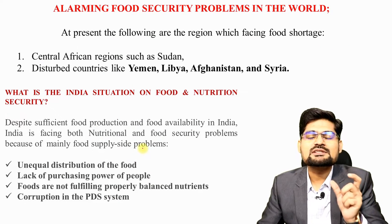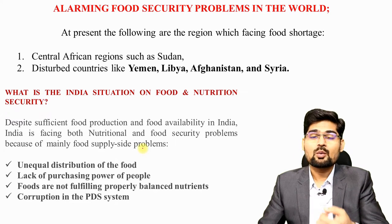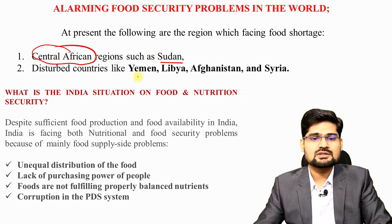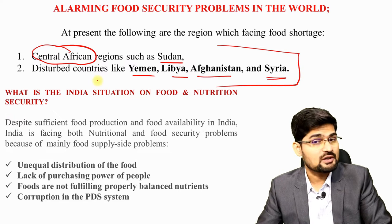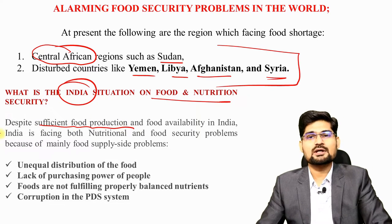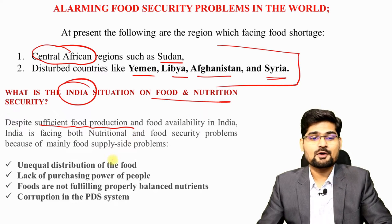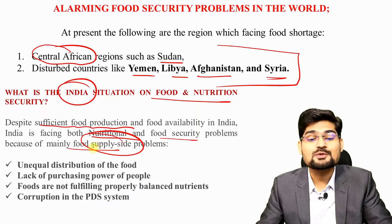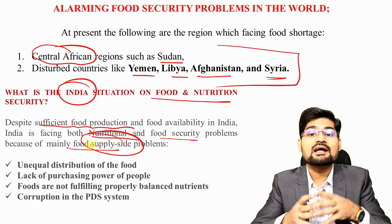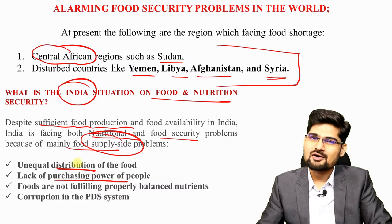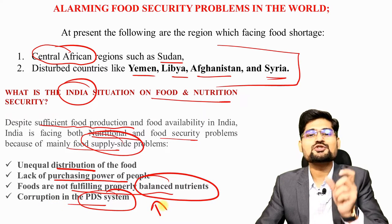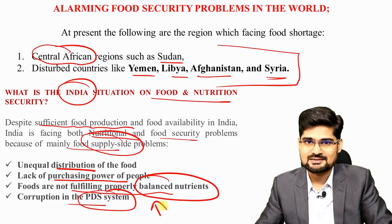Why is food security alarming and threatening for the future? At present, countries like Central and Sub-Saharan Africa, Sudan, Yemen, Libya, Afghanistan and Syria are facing food shortages and famine situations. In India, despite sufficient food production and food availability, the problem lies in nutritional and food security in terms of supply and distribution. India has abundant agricultural land and over 60% of the population is dependent on agriculture, yet challenges remain — unequal distribution, lack of purchasing power, foods not fulfilling balanced nutrition, and corruption in the PDS system.